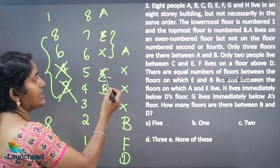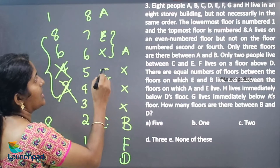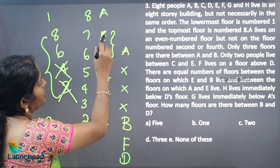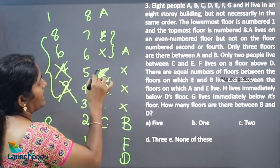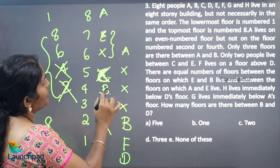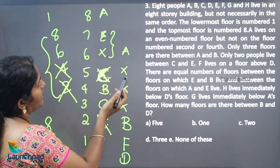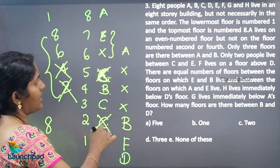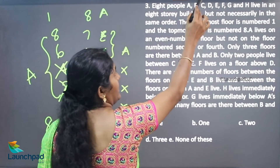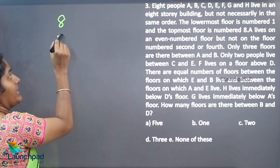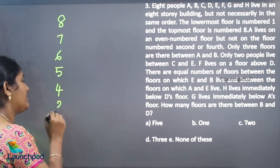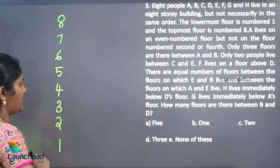There are 2 floors between E and C. If I am placing C here, there are no 2 floors — so I can cancel it. If I place C here, there are 2 floors between them. But that is not possible either. So the diagram is not possible. We will move on to the next arrangement: 8th, 7th, 6th, 5th, 4th, 3rd, 2nd, 1st.